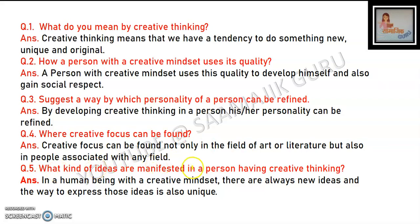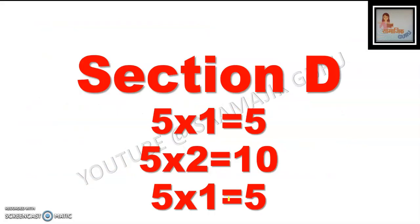Next question: What kind of ideas are manifested in a person having creative thinking? In a human being with a creative mindset, there are always new ideas, and the way to express those ideas is also unique. For the comprehension, take a screenshot of the question paper from the back side and solve it. Section D has three parts — attempt one question of 5 marks, two questions of 5 marks each (total 10), and one question of 5 marks.